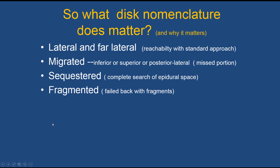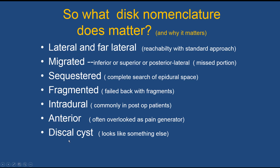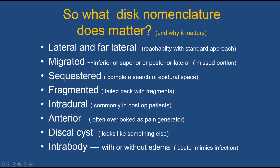Failed back syndrome is frequently associated with fragmented discs where a piece of disc is removed but a small piece is left behind, causing further problems. Intradural discs typically occur in post-operative patients where weakening of the dura allows disc material to move into the subarachnoid space. Anterior discs — moving anteriorly from the disc space — are often overlooked but can be a pain generator. Always mention posterior disc findings and look carefully anteriorly, as this is an often underestimated cause of pain.